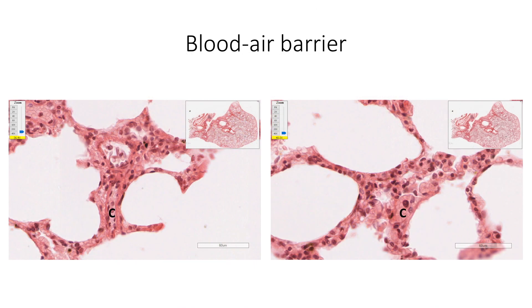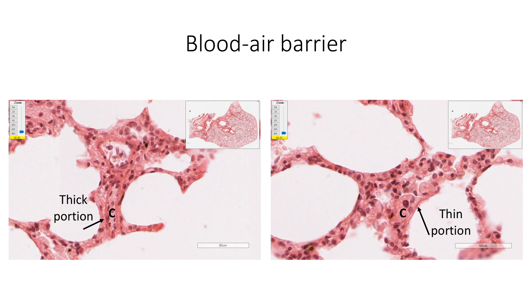The blood-air barrier is the barrier across which gases must diffuse between the alveolus and the capillary. At places of gas exchange, the blood-air barrier is made of a thin portion — as seen in the right-hand picture — where the barrier between the air and the blood in the capillary is formed successively by a layer of surfactant, Type 1 pneumocytes, basement membrane of the alveolar epithelium, basement membrane of the capillary, and the endothelial cells, with the two basement membranes close to each other. On the other hand, the blood-air barrier has a thick portion elsewhere, as shown in the left-side figure, where variable amounts of connective tissue fibers and cells intervene between the two basement membranes.